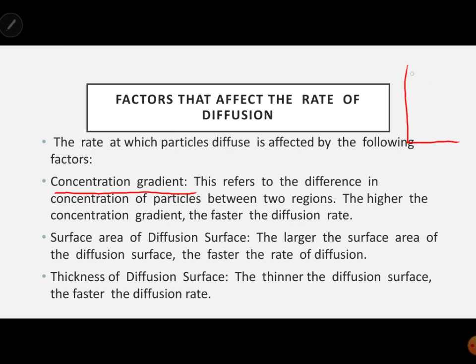The first factor is the concentration gradient, usually represented as a slope. It refers to the difference in concentration between two regions. If region 1 has low concentration and region 2 has high concentration, that difference is the concentration gradient. The higher the concentration gradient, the faster the diffusion rate.